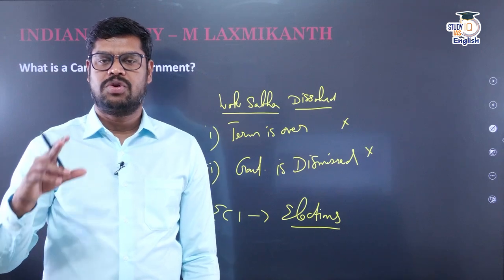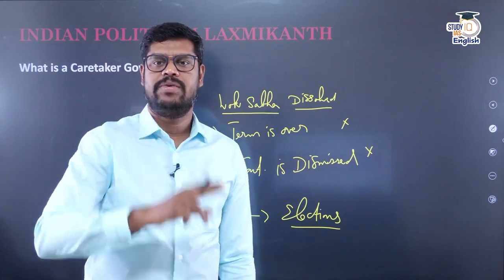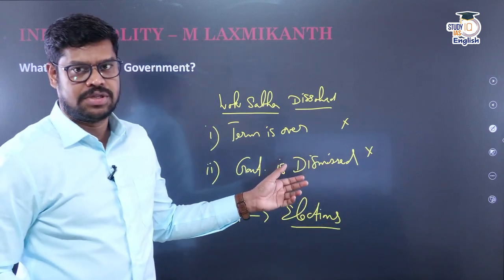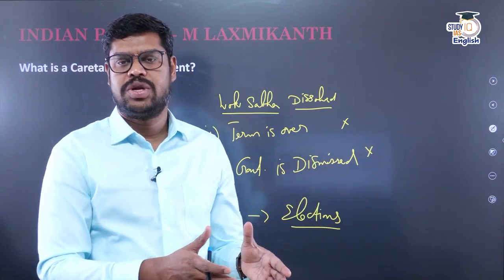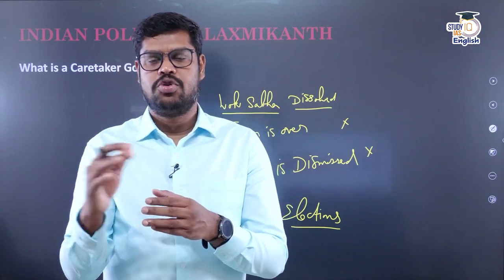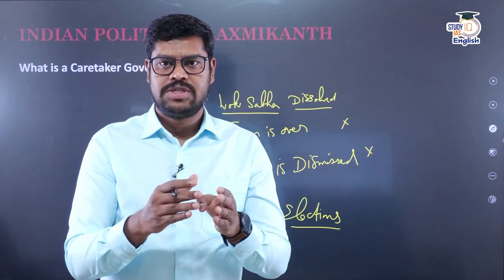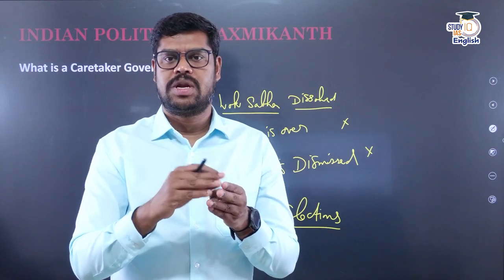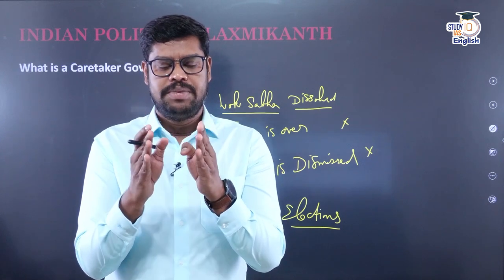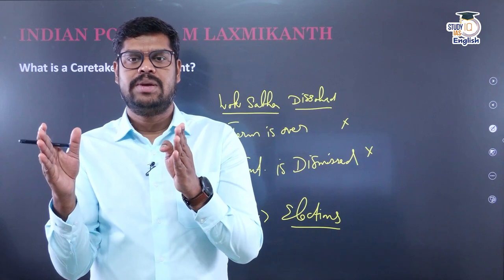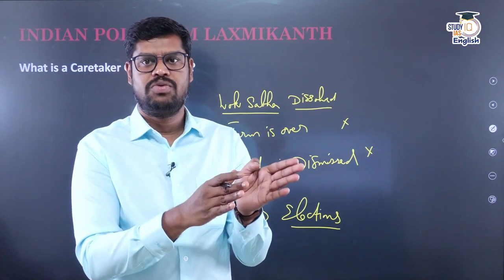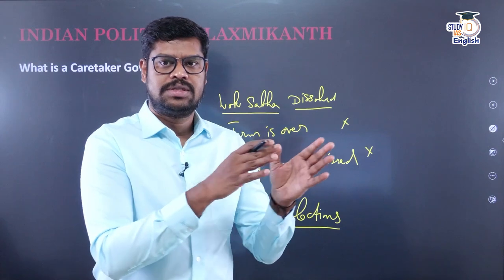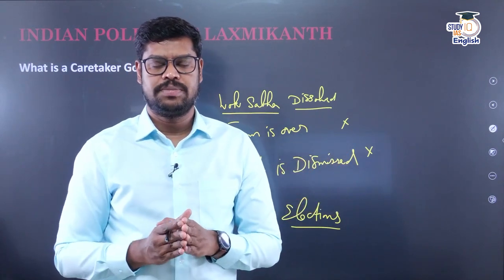The Constitution says there shall always be a Council of Ministers to aid and advise the President — the President cannot directly take up administration. So before the 2024 elections, the Lok Sabha will be dissolved by the President. After dissolution, the Election Commission will take at least two to three months to conduct elections and elect new members. The question is: what happens during this interim time between the dissolution of the Lok Sabha and the election of the new 18th Lok Sabha?